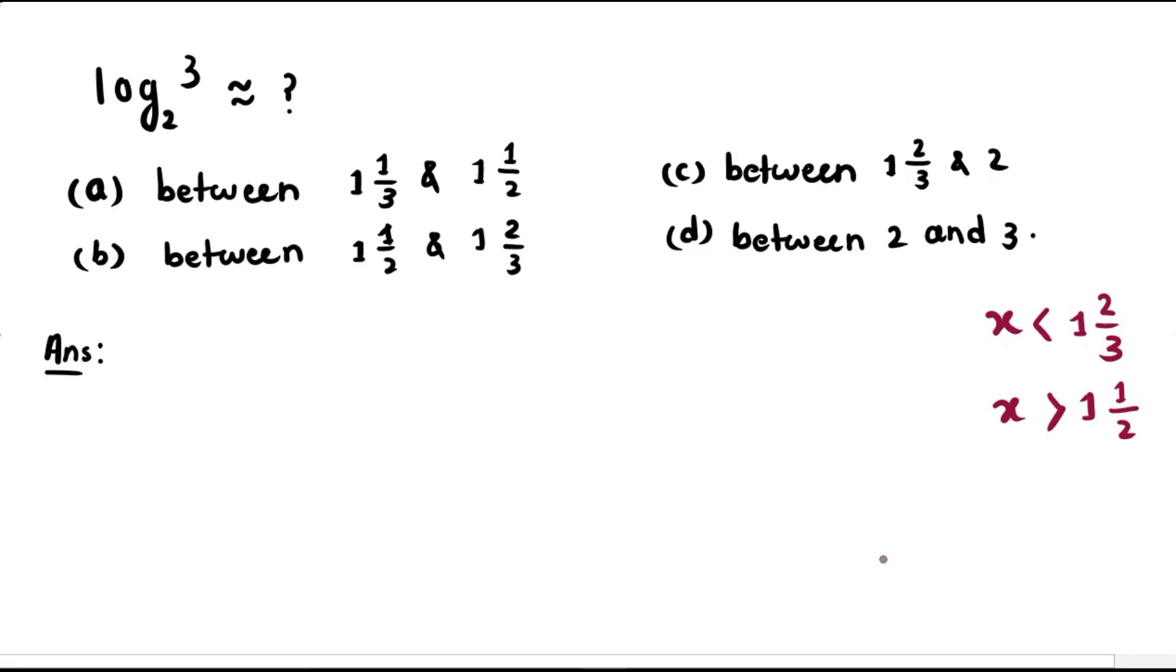So now we're going to put these two inequalities together, and we get x is between 1 and 1/2 and 1 and 2/3. And that's our option B.